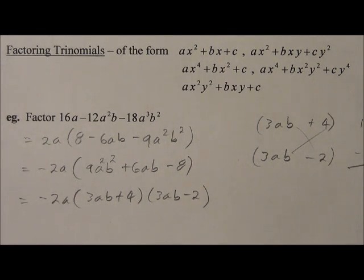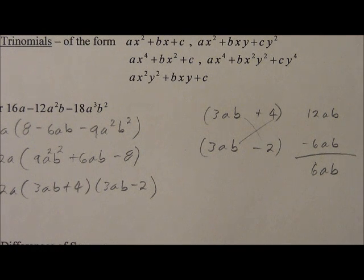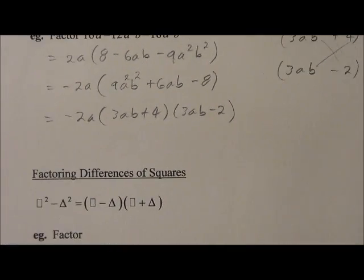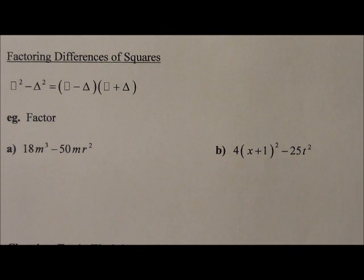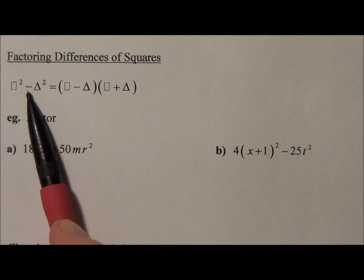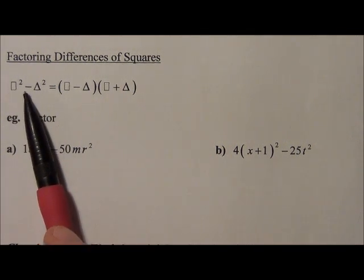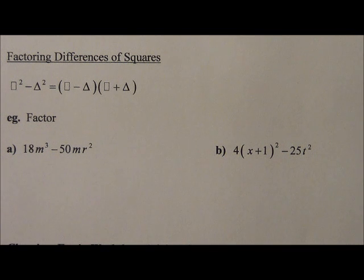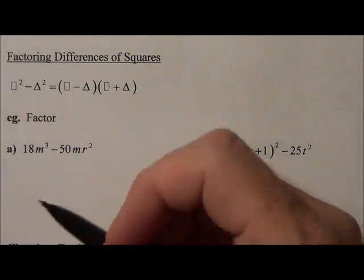Now we're going to move on to factoring differences of squares. Like yesterday, we started out with multiplying a difference in a sum. Now what we're going to do is we're going to start with the difference of squares. So difference, which is subtraction, of two squares, so that's why we have the difference of squares, will give us a form in this, or will give us the factory form like that. So now remember what we're going to be looking for. The very first thing to look for any time you want to factor.